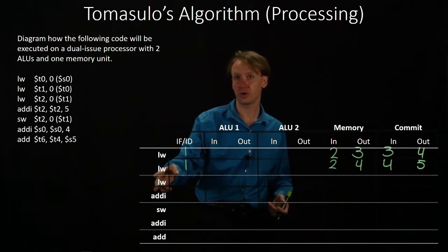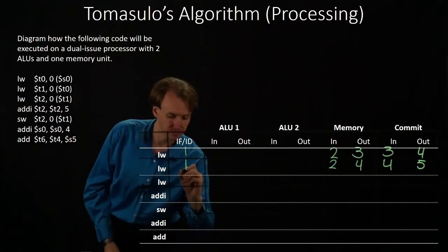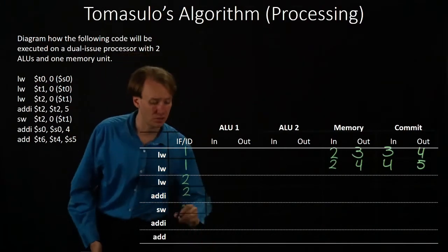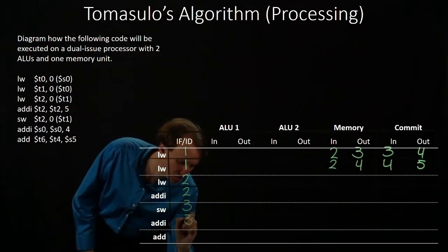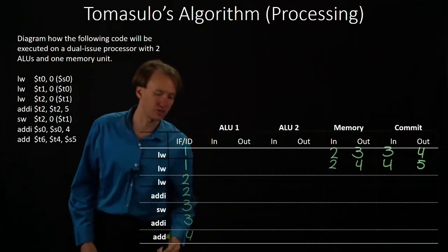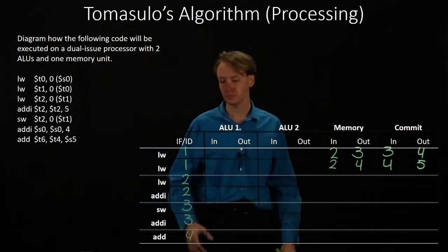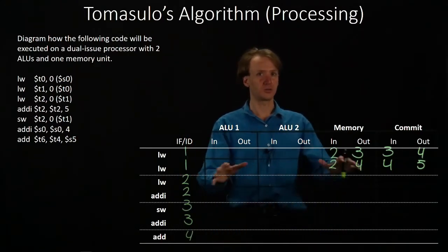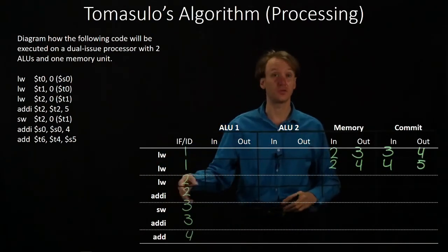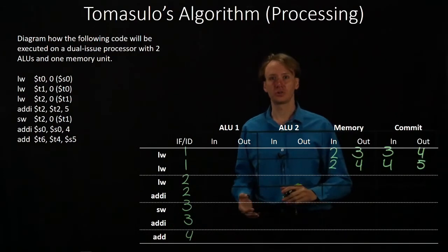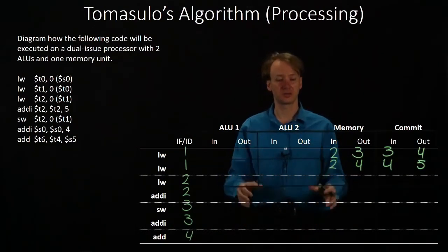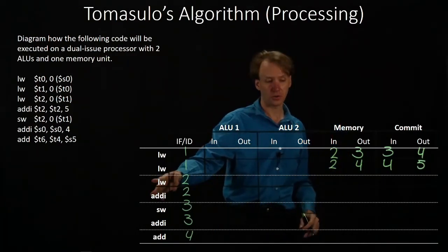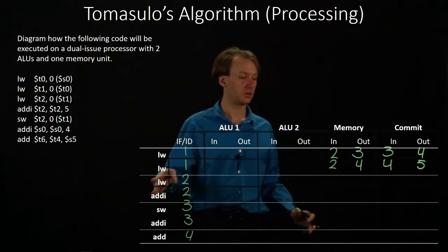In the second cycle, we'll get in the third load word and the out-immediate instruction. Then in the third cycle, we'll get in two more instructions. Then in the fourth cycle, we'll get the last instruction to come in. We're always going to issue two instructions every cycle. We'll assume that our reservation stations have sufficient space for the handful of instructions we've got, and we'll just worry about issuing them to the various functional units and when they get committed. Our third load word depends on the results of our second load word instruction as well.